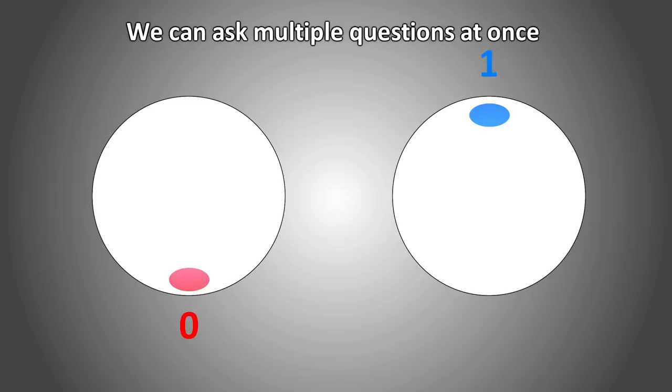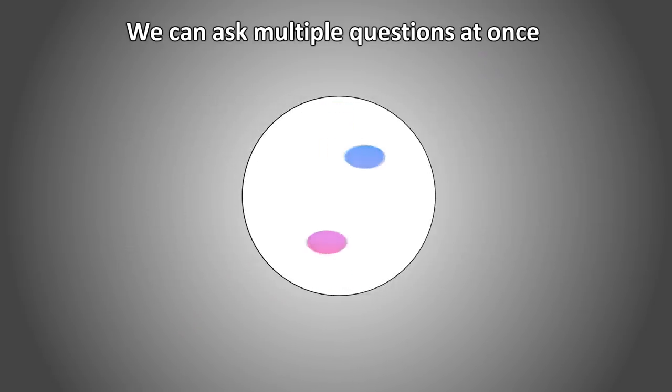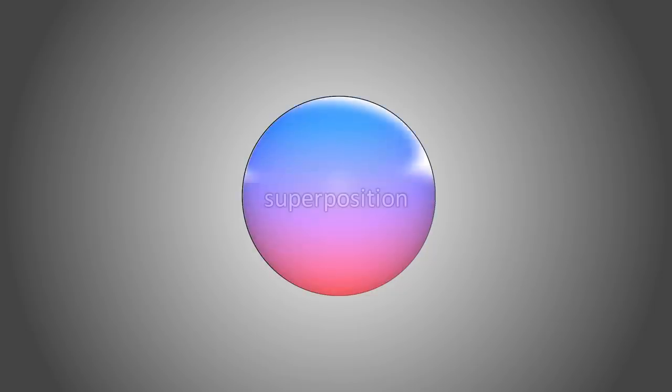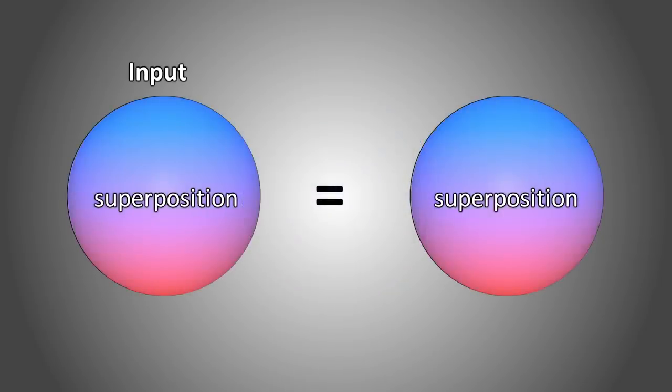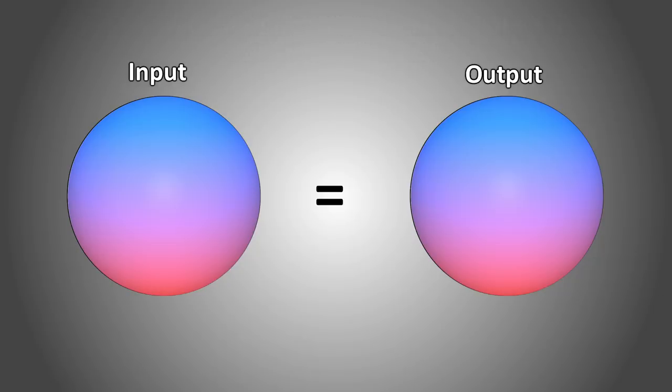The fact that we can use qubits in superpositions is very powerful because it means we can ask several questions at once. What is the result if the qubit is 1? What is the result if the qubit is 0? What is the result if it is anything in between? So we can calculate the process where the bit is both 0 and 1, and anything in between. The downside is, of course, that the result will also be some superposition. So the quantum computer needs to maintain superposition throughout the process.